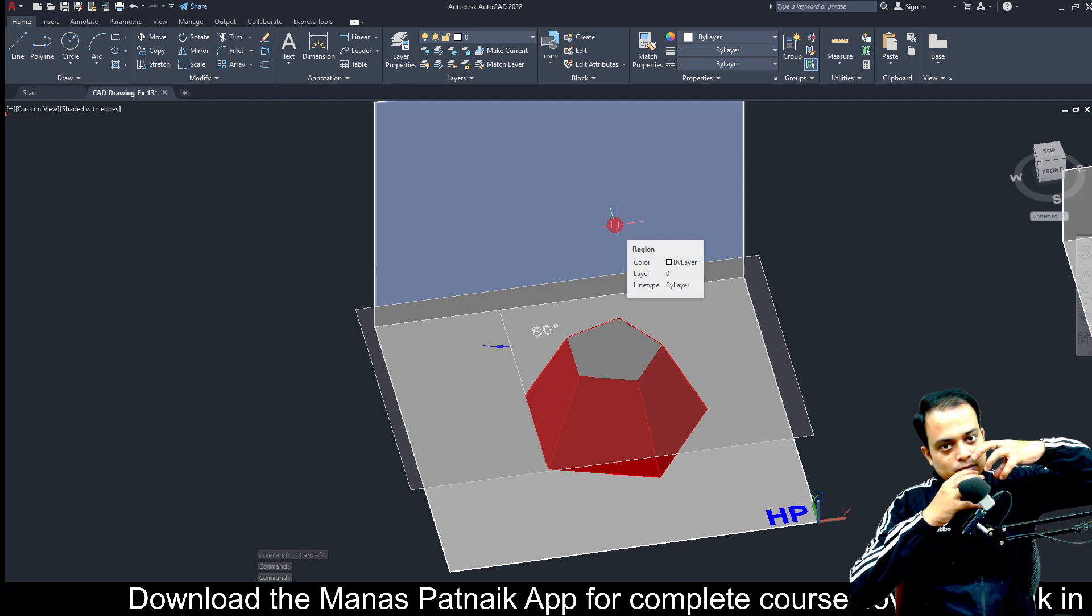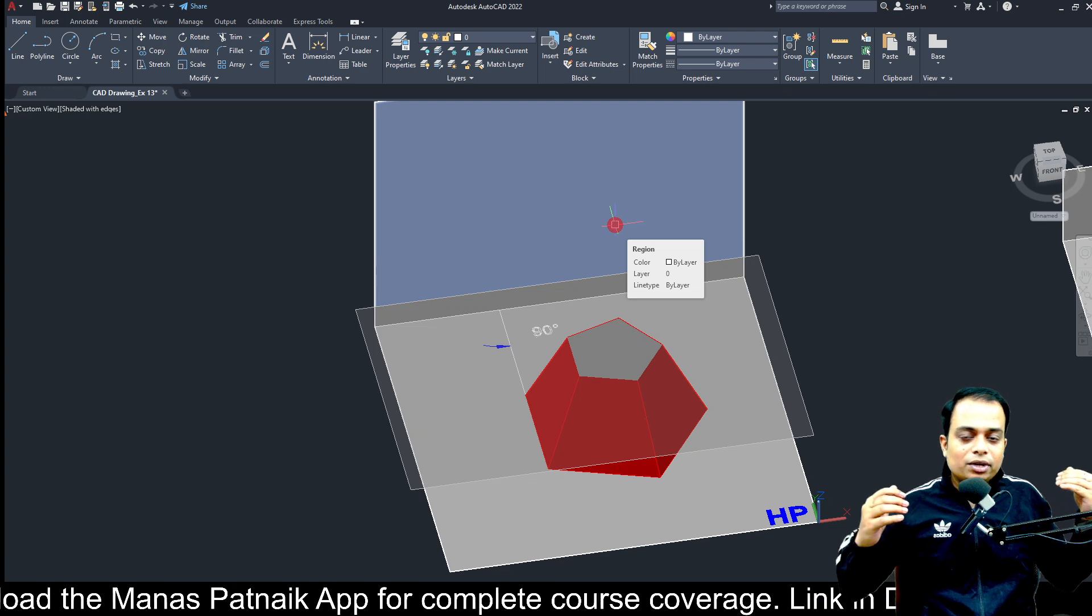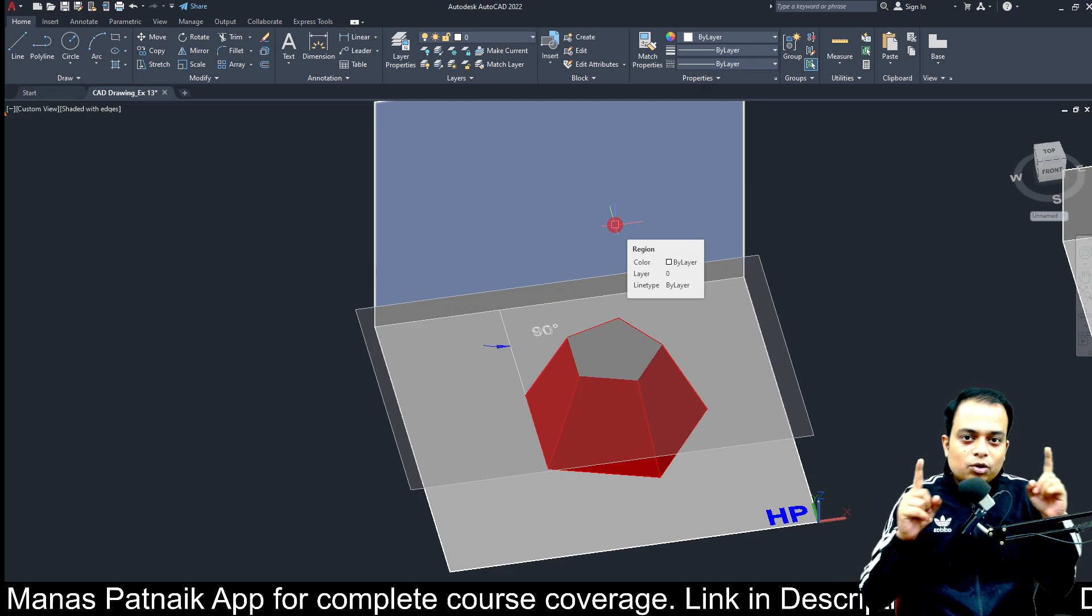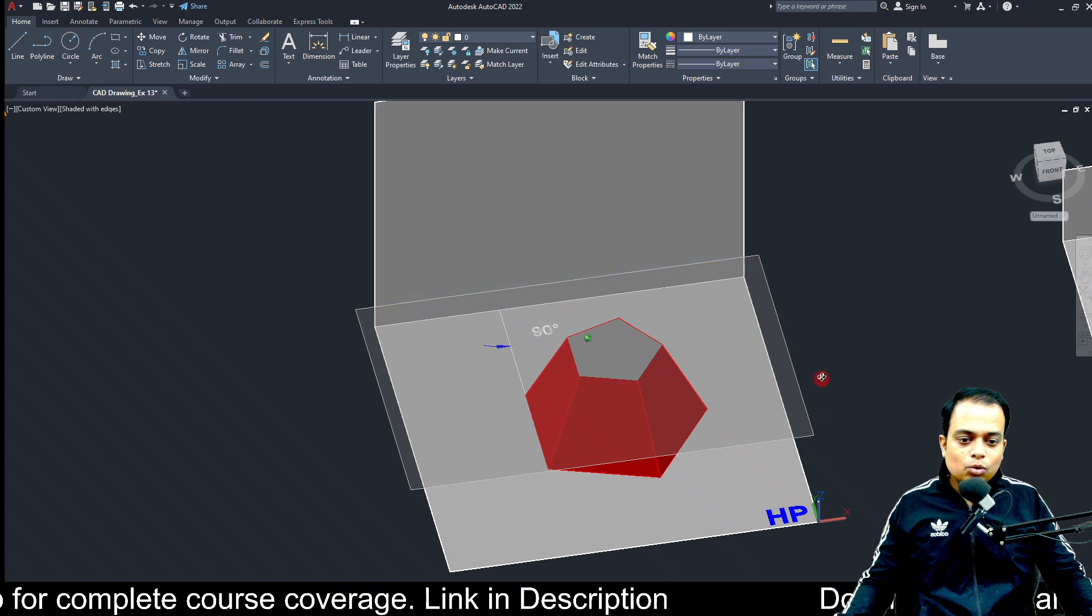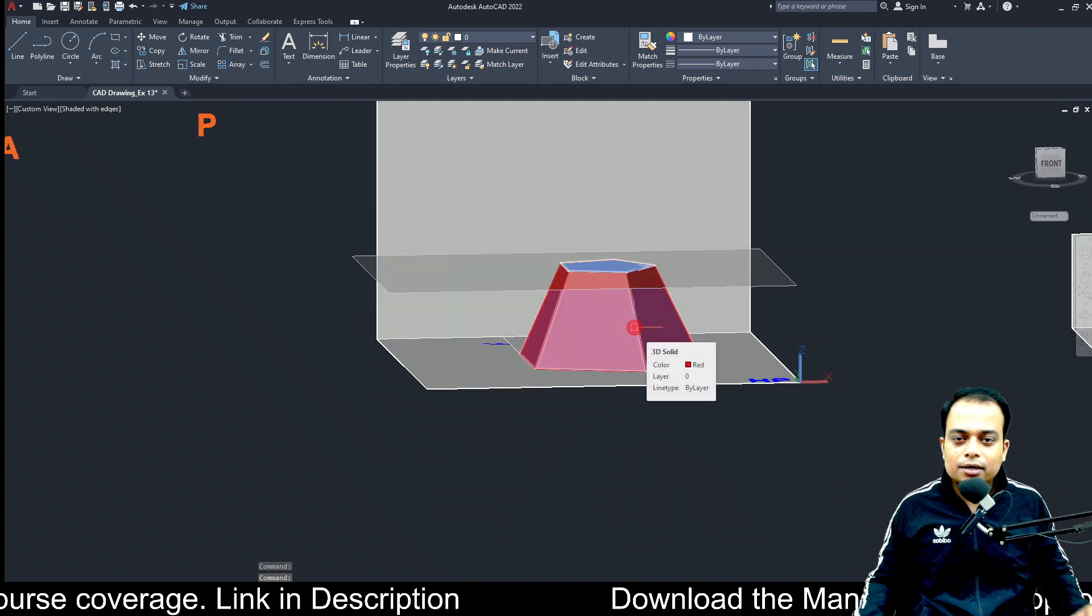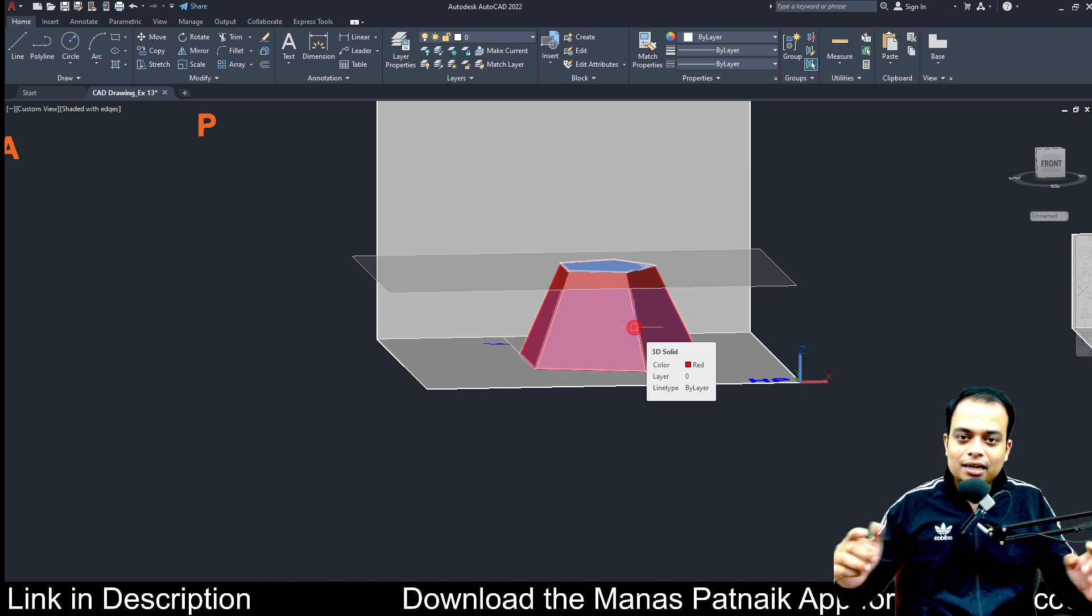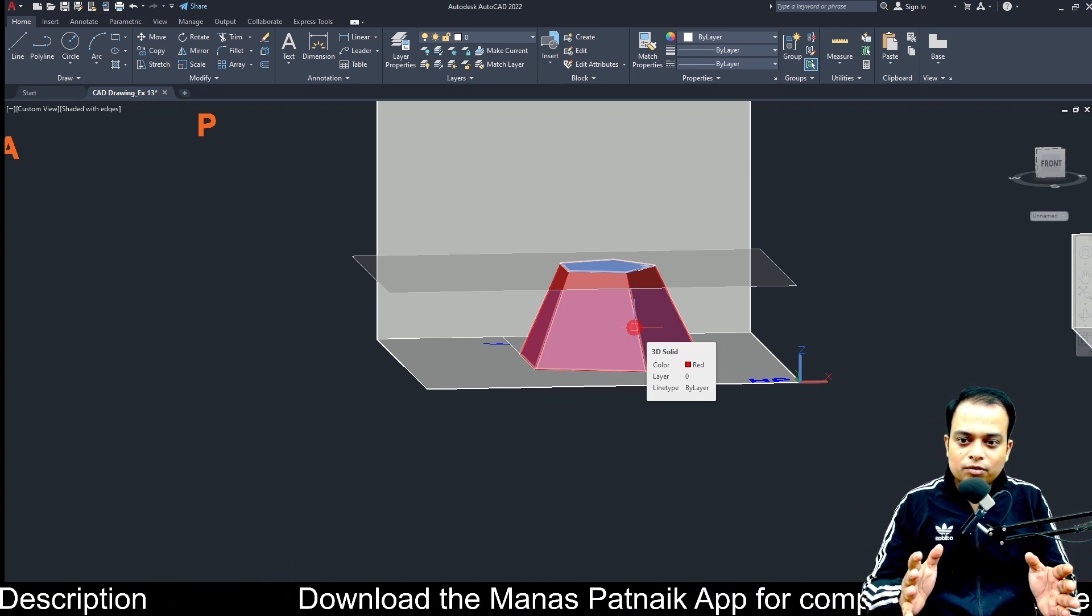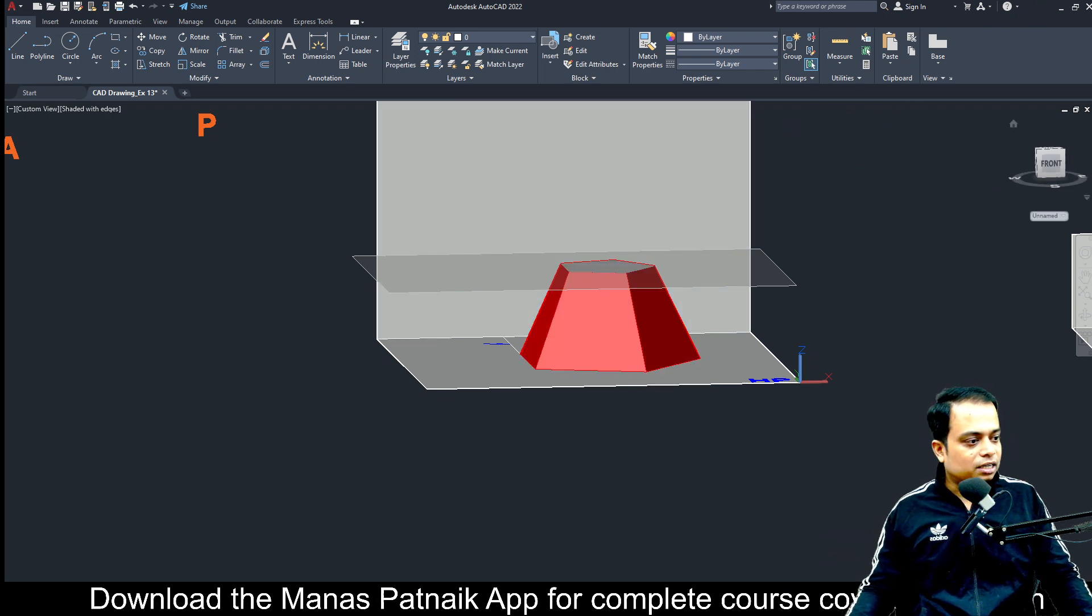Please note one more thing: the portion of the pyramid above the cutting plane, since it has been taken away, we are not going to erase it. Instead, we are going to keep it very light. The portion of the pyramid which lies below this cutting plane shall be kept dark, thick and dark. The portion above the cutting plane is thin and light. That's the protocol which we'll follow.